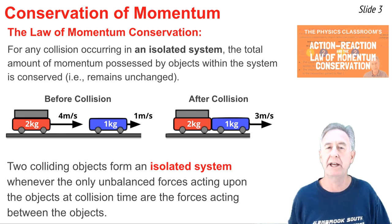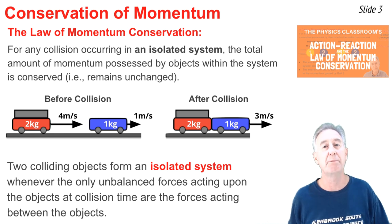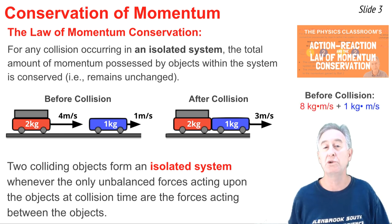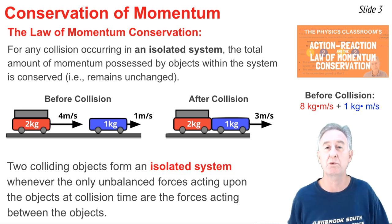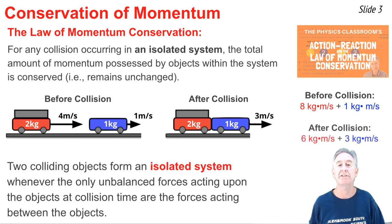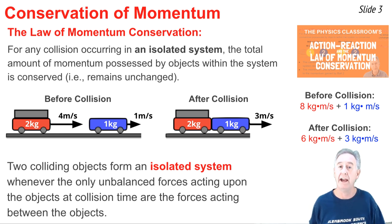If we do a quick momentum analysis using the equation momentum equals mass times velocity, we'll find that momentum is indeed conserved. For the red cart before the collision, the momentum is 2 times 4, that's 8. And for the blue cart, it's 1 times 1. The total momentum before the collision is 9 units. After the collision, for the red cart it's 2 times 3, that's 6, and for the blue cart it's 1 times 3, that's 3. The total is 6 plus 3, which is 9 units of momentum — the same before as after.